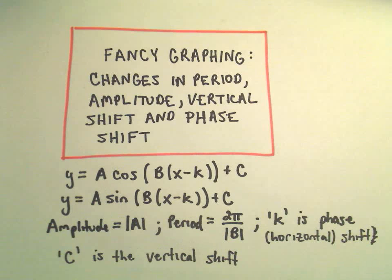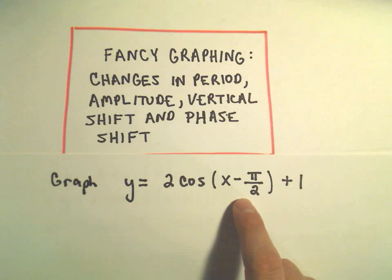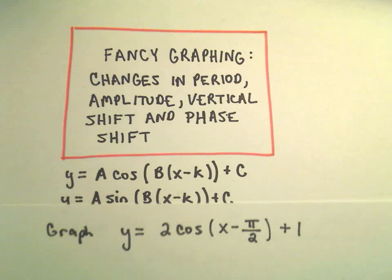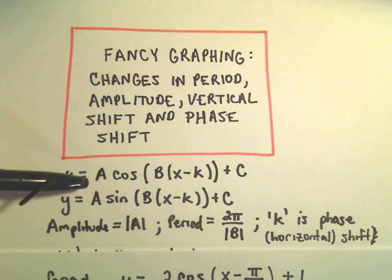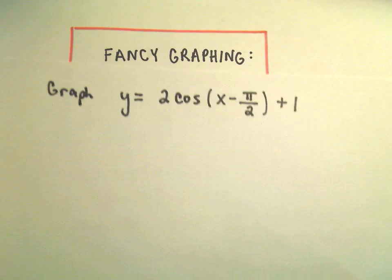All right, in this video I'm going to do an example of graphing 2 cosine of the quantity x minus pi over 2 plus 1, and we'll talk about all of these things: the amplitude, the period, the phase shift, and the vertical shift to help us graph.